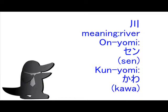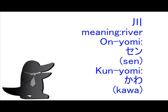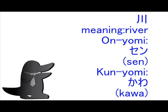OK, let's start with this one. Today's Japanese Proactable Kanji is this. The main meaning of this kanji is river. In on'yomi reading, you can read it as 'sen.' In kun'yomi reading, you can read it as 'kawa.'